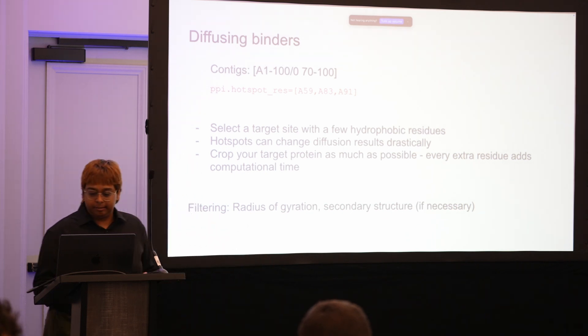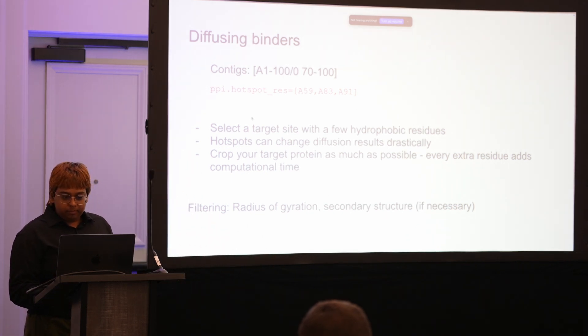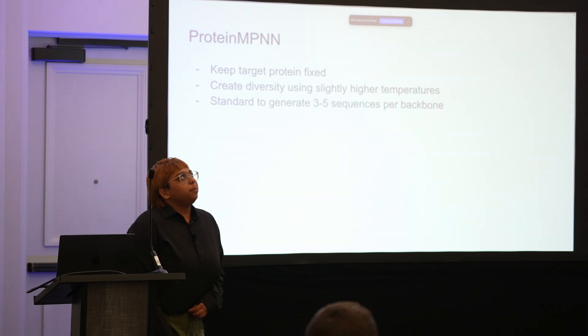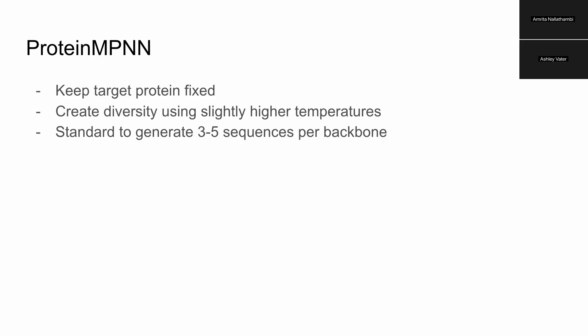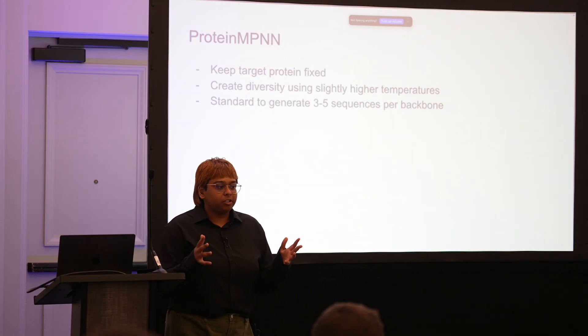For the protein MPNN step you want to keep your target protein fixed—obviously you only want to redesign the binder. I like to try it with the lowest temperature first and see how much diversity it gives me. If that isn't enough I'll bump up the temperature by 0.1, so try starting with the lowest possible temperature and then turning it up by 0.1 at a time.